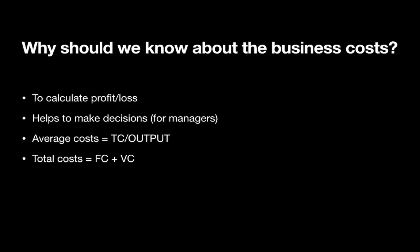So why should we know about business costs? First, to calculate the profit or loss of the business. Second, to help make decisions in the business, mainly for managers. Average cost is equal to the total cost divided by the output, and the total cost is equal to the fixed cost plus the variable cost.